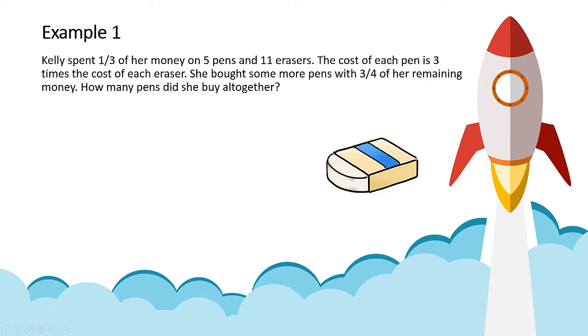So in this question, you are not given the cost for the pen and eraser, but you do know that the cost of each pen is 3 times the cost of eraser. So this is a very important information. We write out the ratio between the pen and eraser, which is 3 units to 1 unit.